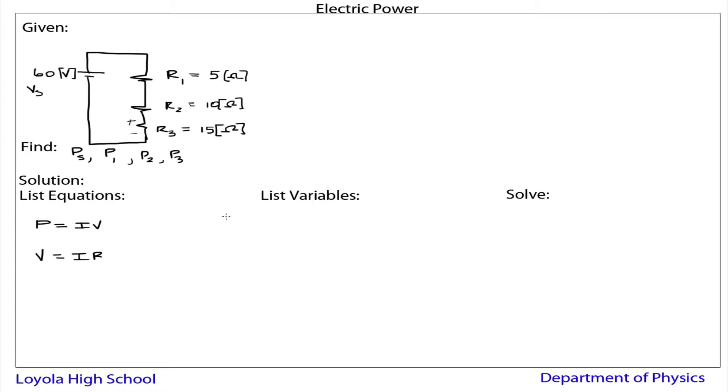So list the variables. So what do we have here? So we have the voltage supply, and we know that is 60 volts. And then we know R1, we know R2, and we know R3. Let's write those down here. This is 5 ohms, and this is 10 ohms, and this is 15 ohms. So we know those values of the resistors.